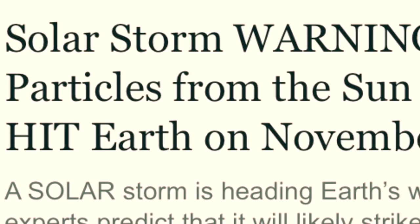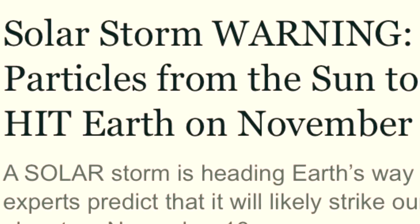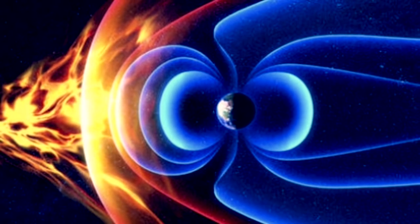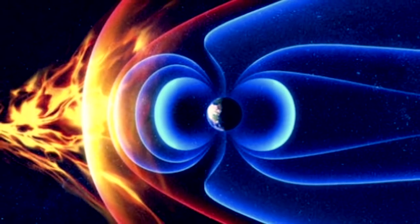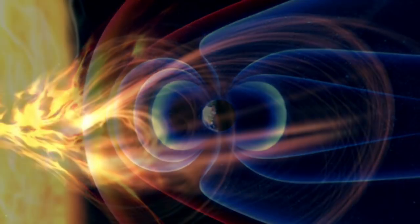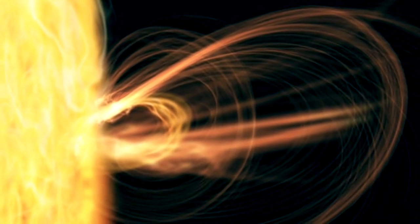Solar storm warning: particles from the Sun to hit Earth on November 18. A solar storm is heading Earth's way, and experts predict that it will likely strike our planet on November 18. The incoming storm is due to a small hole known as a coronal hole which opened on the Sun's atmosphere, unleashing a stream of solar particles into deep space.